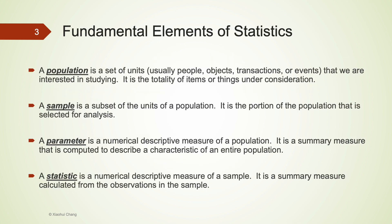There are four fundamental elements of statistics: population, sample, parameter, and statistic. These four elements come in two sets of pairs — population and parameter is one pair, and sample and statistic is another pair.